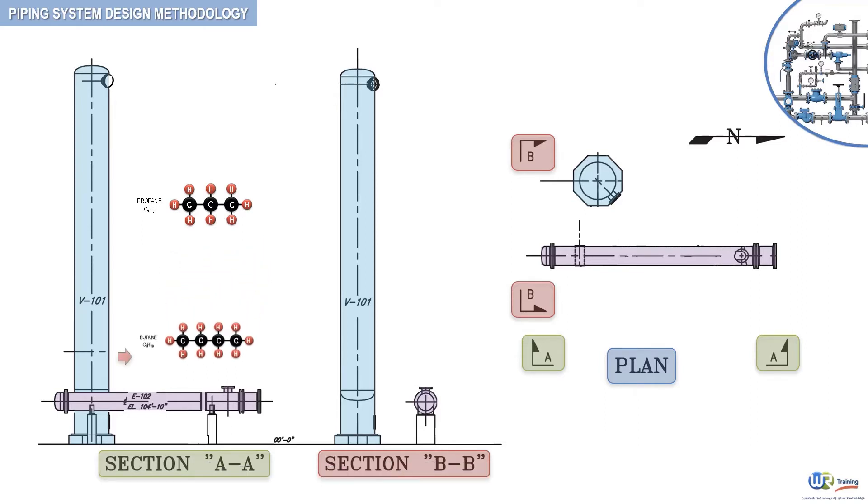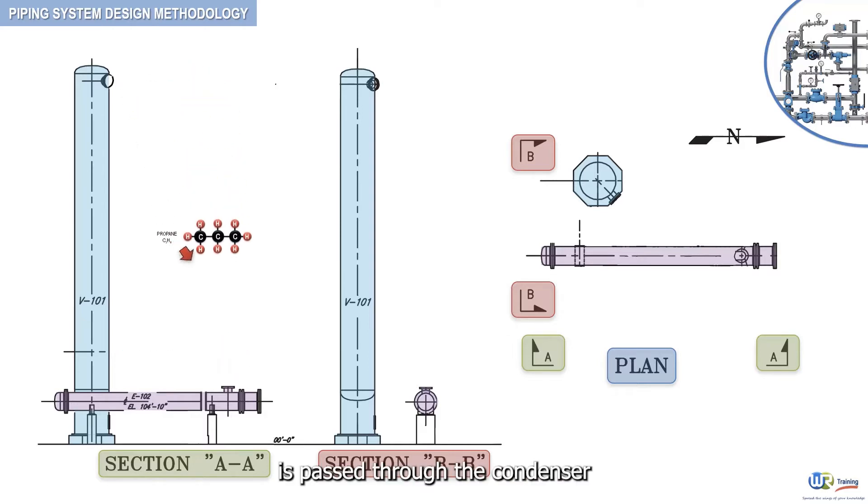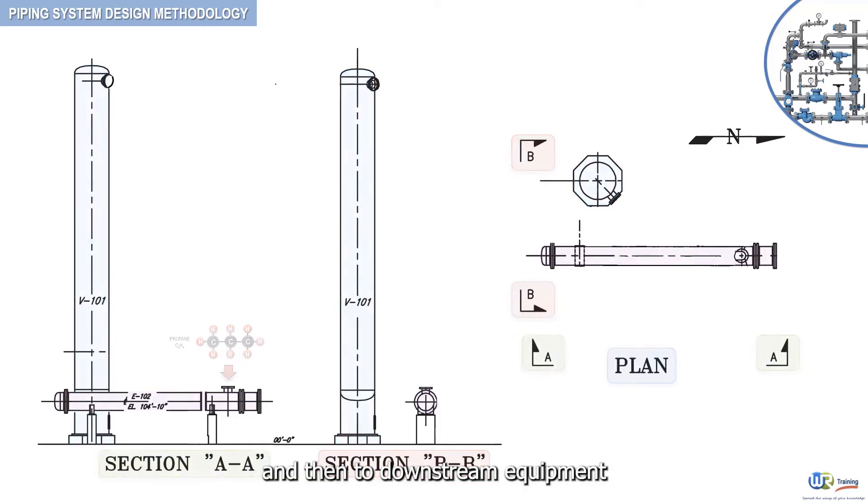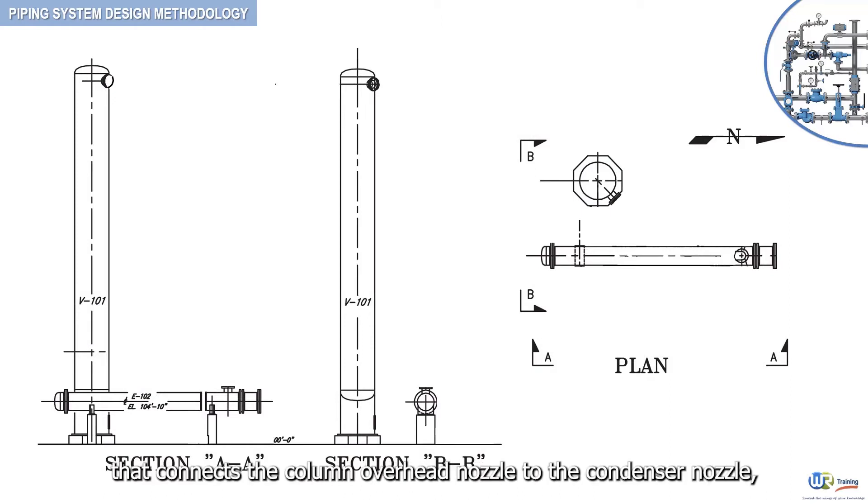Propane is passed through the condenser and then to downstream equipment. The objective of this section is to design the propane pipe that connects the column overhead nozzle to the condenser nozzle, as highlighted here.